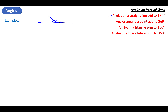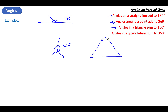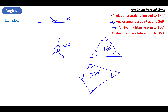If I've got two angles on a straight line they will add up to 180 degrees together. Angles around a point add up to 360 — so if you've got a point with various angles coming off it, all of those add up to 360 degrees. If you've got a triangle, the angles inside will always add up to 180, and if you've got a quadrilateral, the angles inside add up to 360.